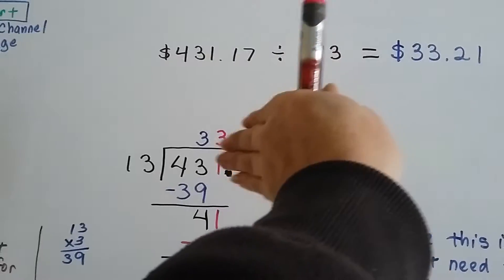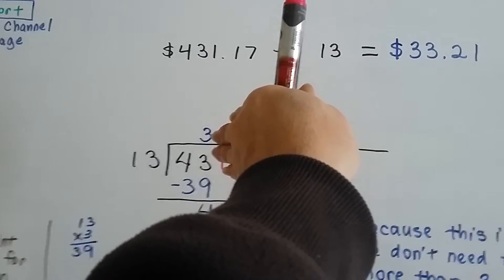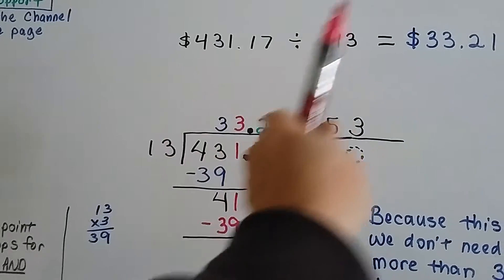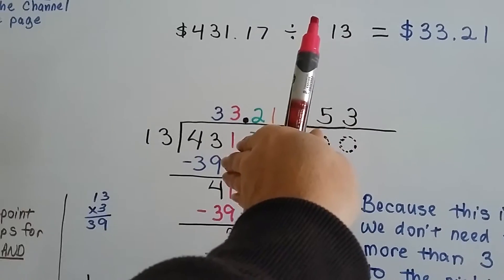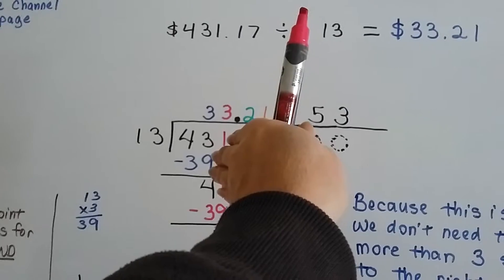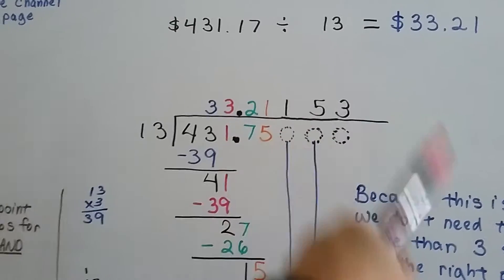And we have 13 goes into 43. Well, 13 times 3 is 39, so we put the 3 up here above this 3 and the 43. We put our 39 here that it equals, and we do our subtraction and get 4.